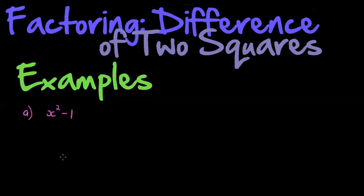Is this the difference of two squares? That's the first thing I have to ask myself — what type of factoring am I going to use? The first thing I always look for is a common factor. Can I find a common factor in the terms I have here? Obviously both terms don't have an x, both terms have a 1, but taking out a 1 as a common factor is unnecessary and irrelevant.